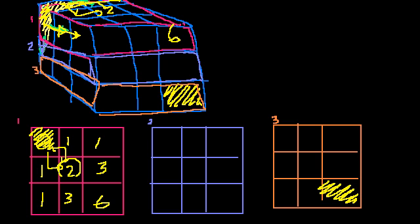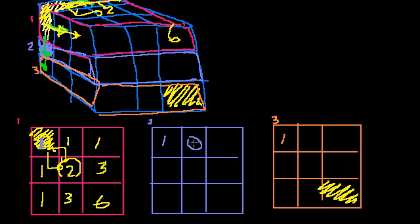Now let's look at layer 2 — this is where it gets interesting. How many ways are there to get to this cell in layer 2? I start here and I can just go straight down, so there's only one way to get there. There's only one way to get to each cell going straight down. Now, how many ways to get to this next cell? In two dimensions there was only one way, but now we can also come from above. Above is layer 1, right there. So we add that cell to this cell: 1 plus 1 is two ways to get there.